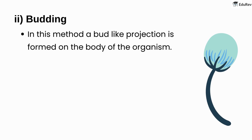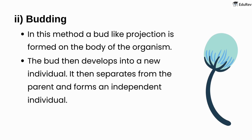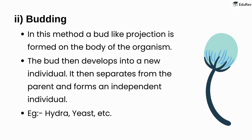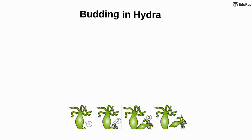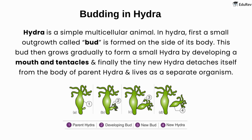Next up, we have budding. In this method, a bud-like projection is formed on the body of the organism. The bud then develops into a new individual and separates from the parent to form an independent individual. Examples include hydra and yeast. In hydra, a simple multicellular animal, first a small outgrowth called a bud is formed on the side of its body. This bud then grows gradually to form a small hydra by developing a mouth and tentacles, and finally the tiny new hydra detaches itself from the body of the parent and lives as a separate organism.